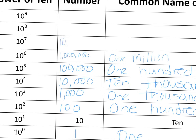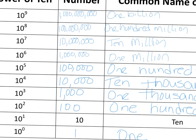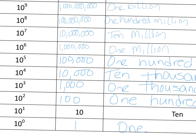10 to the 7th is 10,000,000. And 10 to the 8th is 100,000,000. And then 10 to the 9th is 1,000,000,000. If you take a look at all of them, notice how many zeros each number has. 10 to the 0 has zero zeros, 10 to the 1st has one zero, 10 squared has two zeros, 10 to the 3rd has three zeros, and so on and so on.